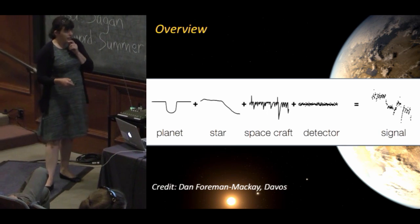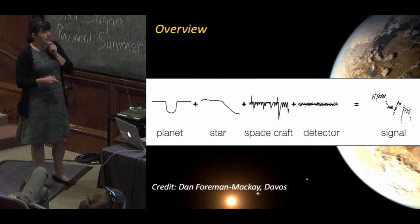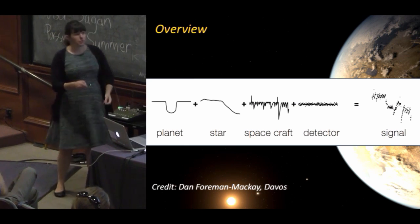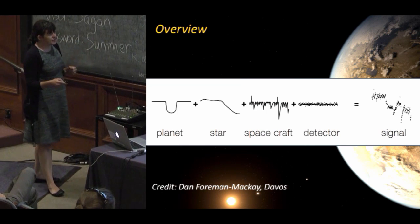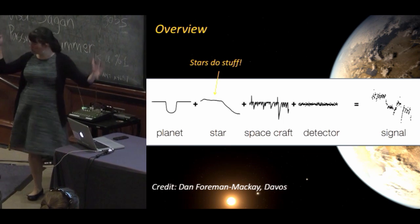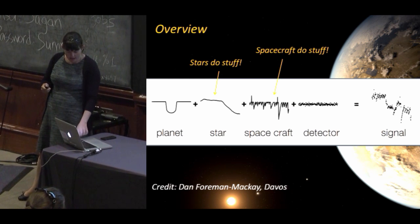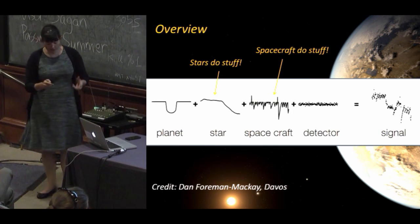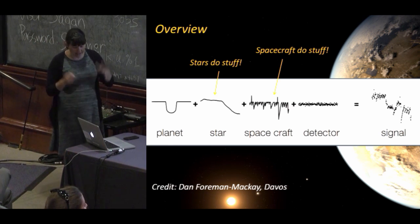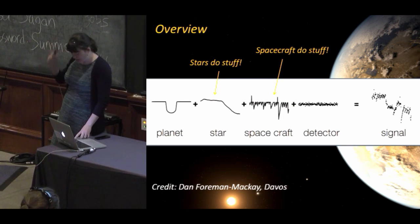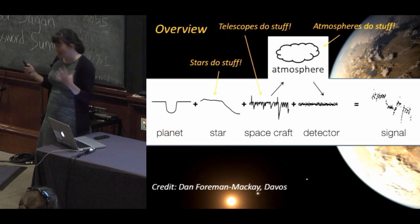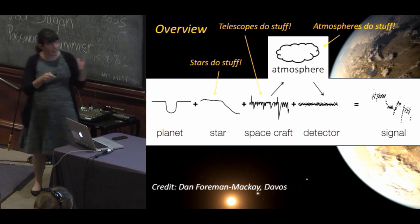I borrowed this slide from Dan Foreman-Mackey from a few weeks ago in Davos because it's a really nice breakdown. Having done a lot of transit surveys, I've seen this a lot. You have your planet signal, your star introducing all the things stars do, and your spacecraft introducing all the things spacecraft do. But we need to break this down further: telescopes do stuff, atmospheres do stuff, and detectors do stuff. Think of it like a nice clean planet signal running a gauntlet — these are all your gladiators.